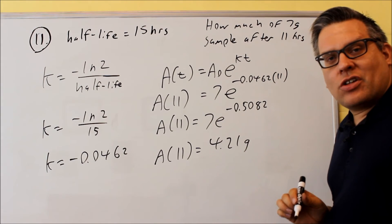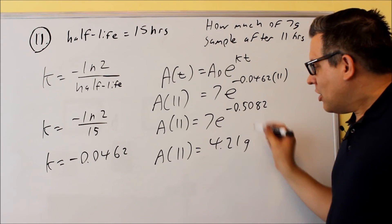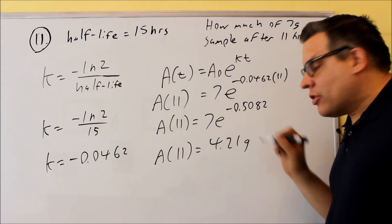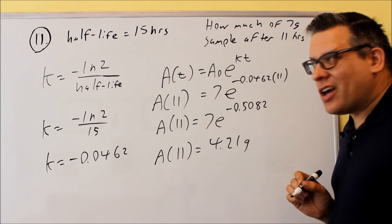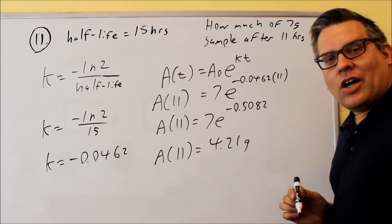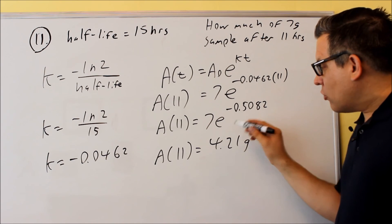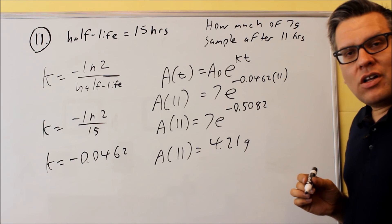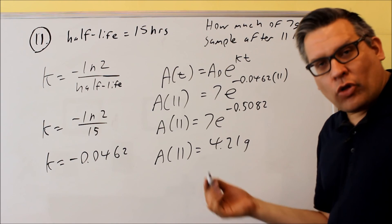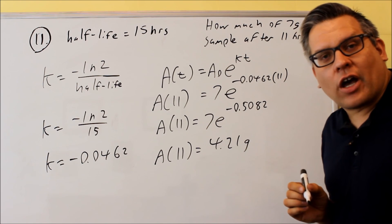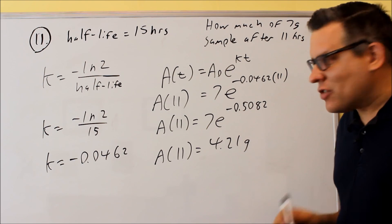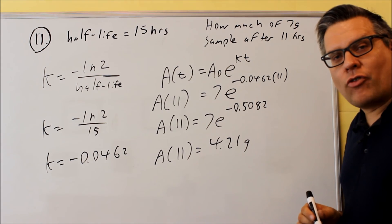This particular question didn't tell us what to round to. My default is I always round to two decimal places. If it doesn't say anything, I round to two places, but since it didn't specify in the question itself, you can round to any digit. Sometimes the question will tell you to round to the nearest whole number, so watch for that. But this one didn't specify, so we can leave our answer in that form.